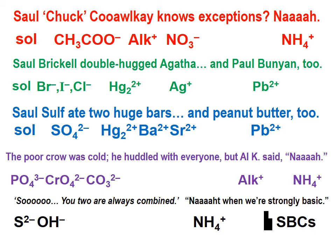We now go to ions that tend to form insoluble compounds: phosphate, chromate, and carbonate. These three ions tend to form insoluble compounds — they bond with all cations, except with the alkali metal cations and the ammonium ion.